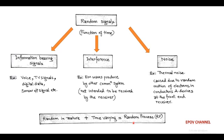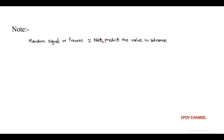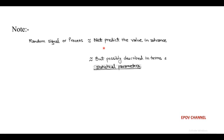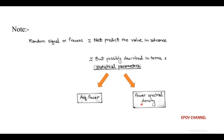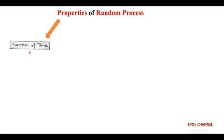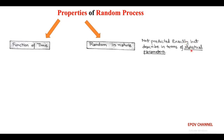We note an important point: since the value of a random signal or process cannot be predicted in advance, it can be analyzed statistically in terms of parameters. These parameters are average power and power spectral density. Because of the two properties — being a function of time and being random in nature — the random process cannot be predicted exactly but can be analyzed in terms of statistical parameters such as average power and power spectral density.